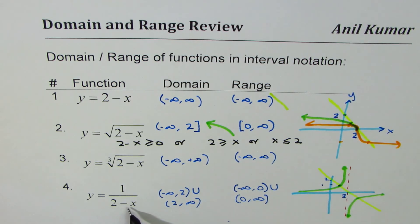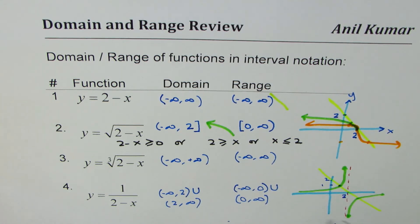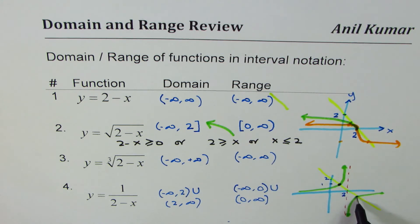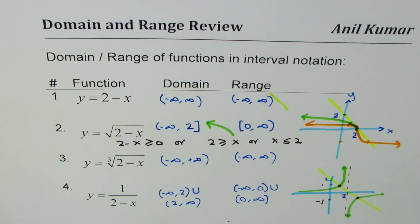We also learned how to sketch a reciprocal function: positive parts have positive reciprocals, negative parts have negative reciprocals. As the function increases, the reciprocal decreases; as the function decreases, the reciprocal increases. At 1, the reciprocal of 1 is 1; similarly for -1, the reciprocal is -1. I hope that is a good review of basic functions — linear, square root, cubic, and reciprocal — and how to find domain and range. We'll look at more complicated functions in the next video. I'm Anil Kumar, thanks for watching!